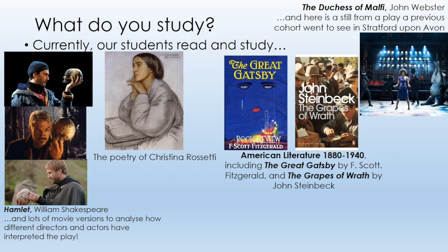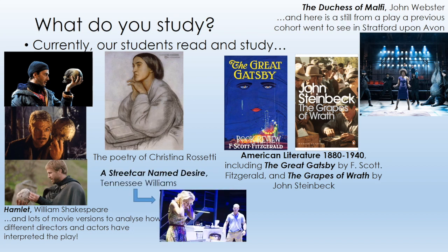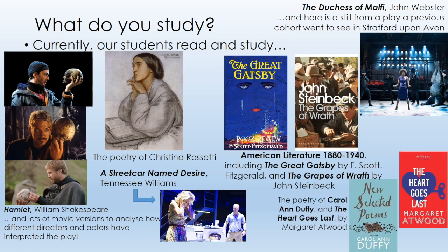On Paper Two, students become experts in a particular field. Our field is American Literature between the dates of 1880 to 1940. Students cover the historical context of the time as well as reading a range of excerpts from the period. They study two novels — The Great Gatsby and The Grapes of Wrath — and compare the two texts to develop their understanding of the American Literature era. The final three texts — A Streetcar Named Desire, the poetry of Carol Ann Duffy, and The Heart Goes Last by Margaret Atwood — are our coursework texts, which students write about in their own time away from the exam halls.